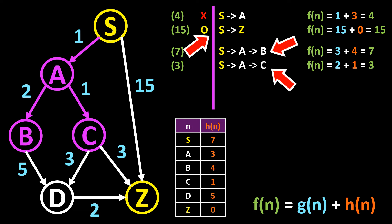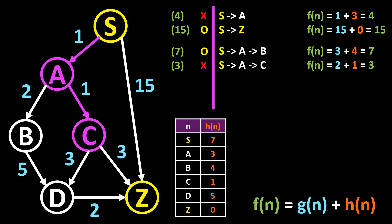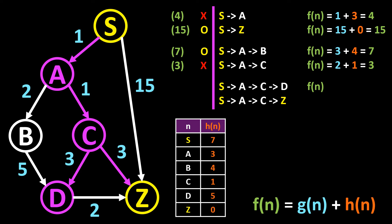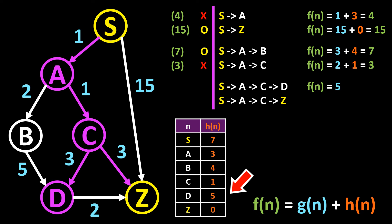Now let's look at which of the paths, including the temp paths, has the lowest costs. In this case it is the path from S to A to C, so we set this to visited. The path S to A to B is added to the temp list. From C we can reach D and Z. We first calculate F of N for the path from S to A to C to D. We calculate 1 plus 1 plus 3 and get 5, then add the estimated cost from D to the destination — in this case 5. The result is 10, which we note down in front of the path.